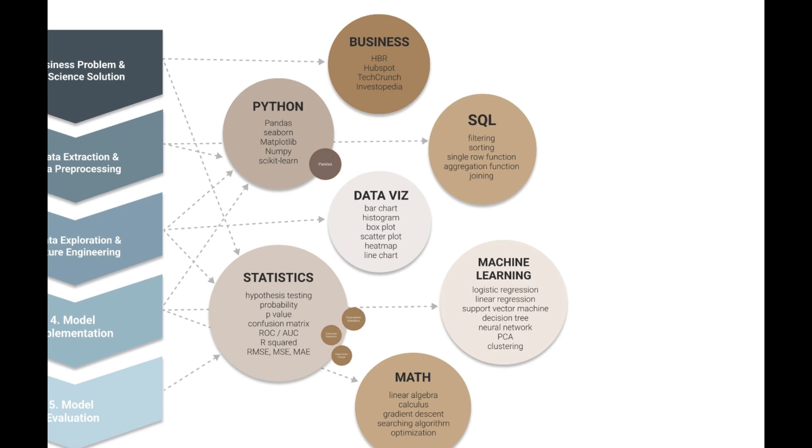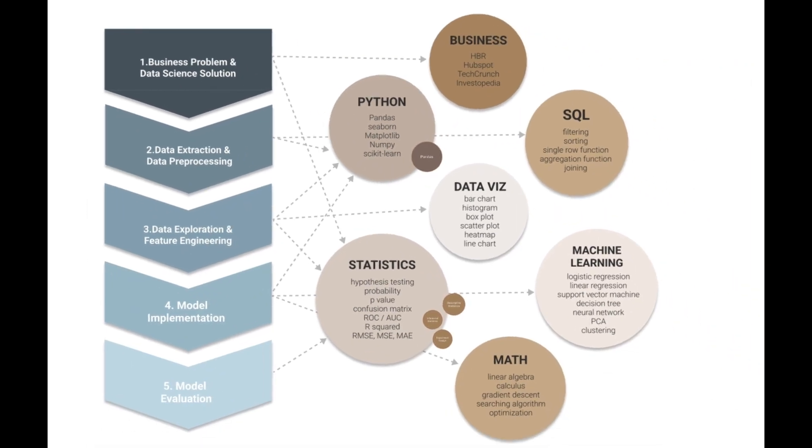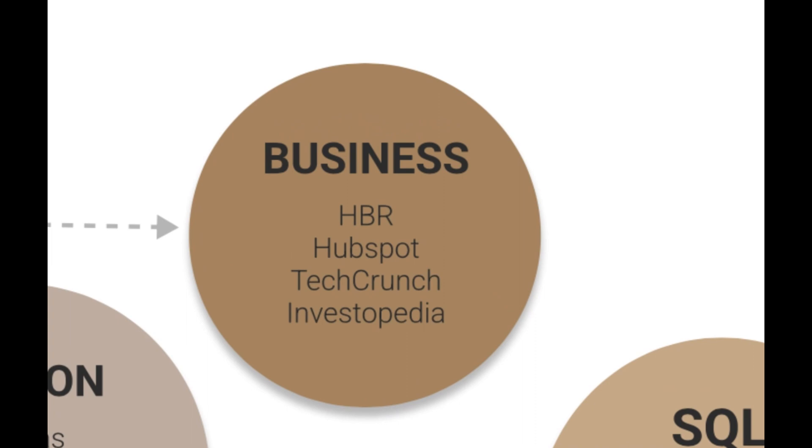The first step of a data science project is to identify the business problem and define the objectives of an experiment design or model deployment. At this stage, it doesn't need technical skill yet but requires business understanding to identify the problem and define the objectives. First to understand the domain-specific terminology appeared in the dataset, then to translate a business requirement to a technical solution. It requires years of experience in the field to build up your knowledge.